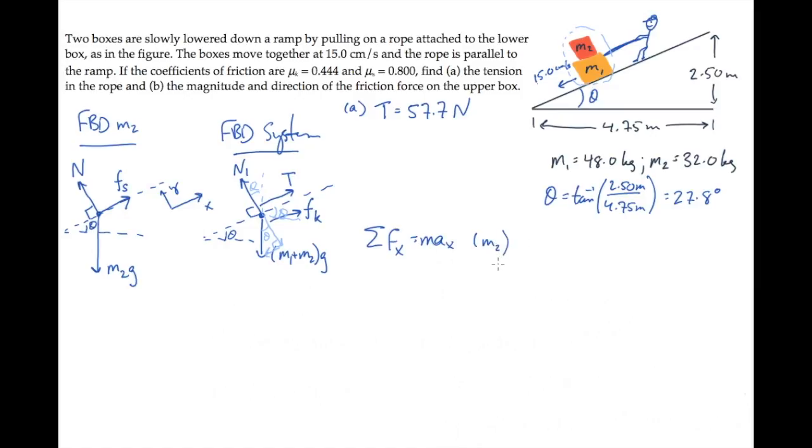To find this, we'll apply Newton's second law in the x-direction. Notice first that a_x is zero, as before. We see there are two forces with components in the x-direction: static friction acts on m2 pushing it up the ramp, and there's a component of m2's weight.